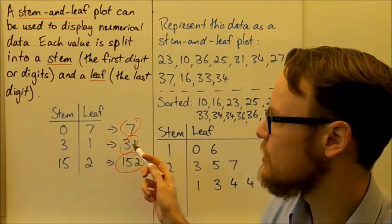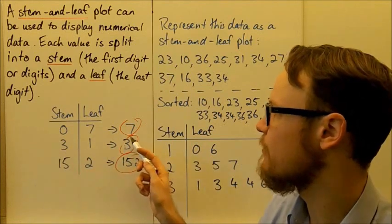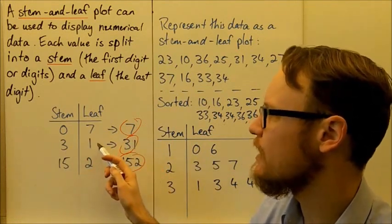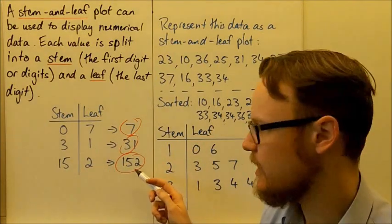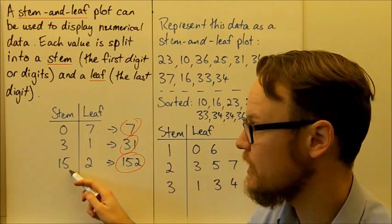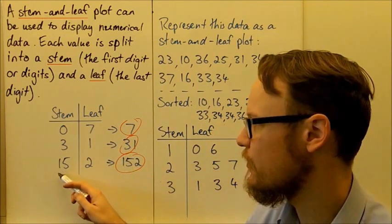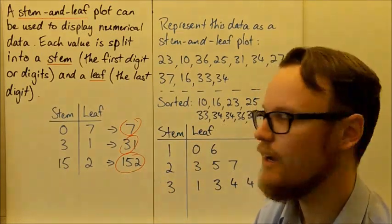Our displaying 31 on our stem and leaf plot, our stem is our first value here, and our leaf is our last value, 1, 31. And for this data value here, 152, our first value is 15, 1, 5 for the 150, and our 2 is our last value and it becomes our leaf.